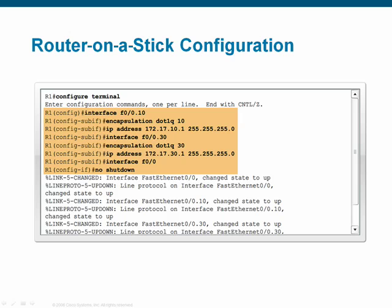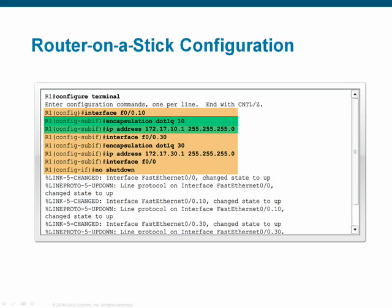When configuring sub-interfaces, you must first create the sub-interface by using the interface command followed by the interface ID and sub-interface ID. In this example, sub-interface 10 has been created on physical interface F00. The convention is to match the sub-interface number to that of the VLAN ID — for example, sub-interface 10 will be used for VLAN 10. Next, use the encapsulation dot1q command followed by the VLAN number that should use this sub-interface. Finally, apply an IP address to this sub-interface. This IP address will serve as the default gateway for devices on that VLAN.